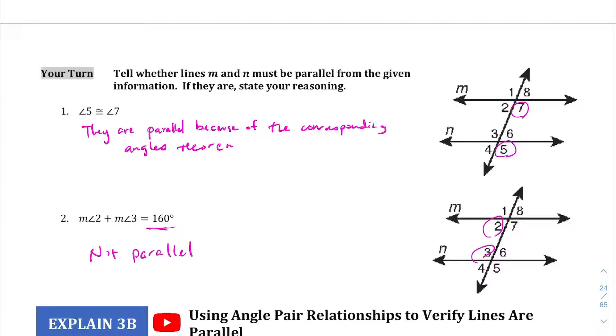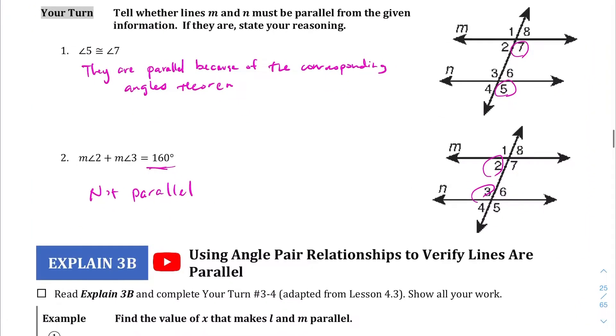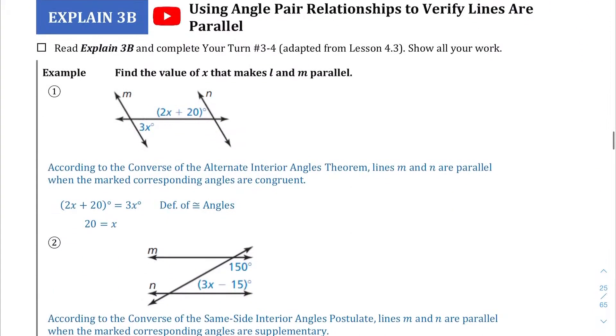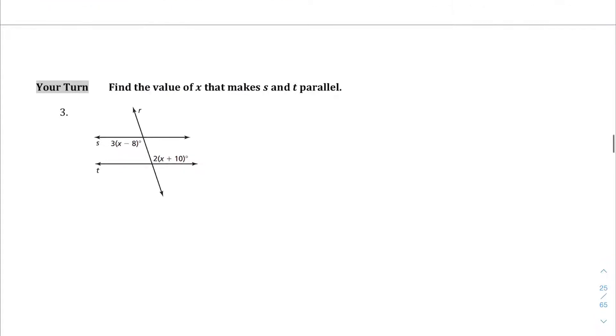Okay. Let's see. Explain 3B using angle pair relationships to verify lines are parallel. So we're doing pretty much more of the same, except we're going to use algebra to solve for X. So we're going to go ahead and just jump into Your Turn, question number three here. Find the value of X that makes S and T parallel. These are alternate interior angles. And the only way that S and T would be parallel is if those two are equal.